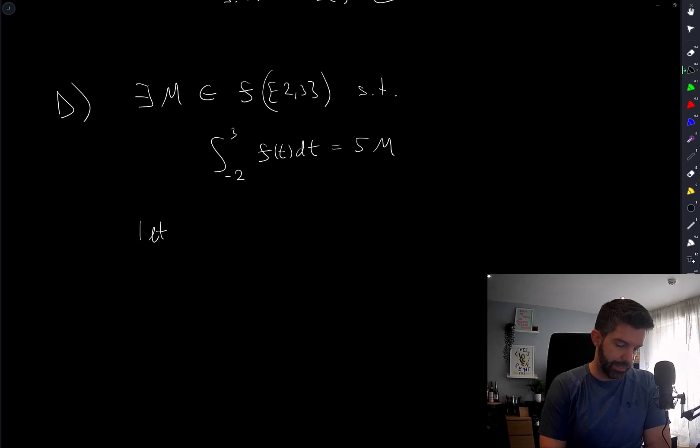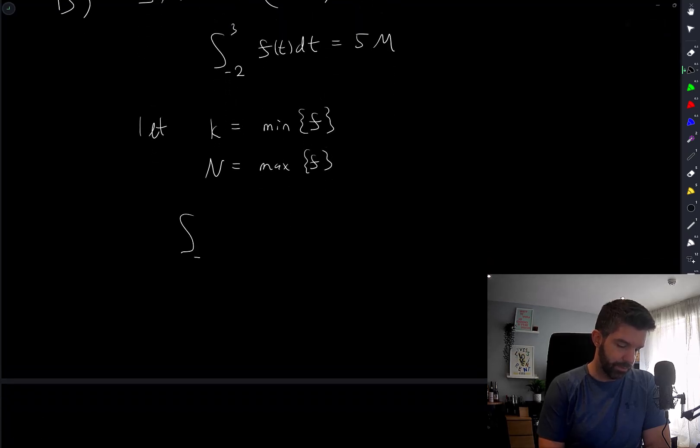Well, let's let k be equal to the minimum of f, and n be equal to the maximum of f. f has a minimum and maximum, because it's continuous on a compact interval. So the integral from negative 2 to 3 of f of t dt, this is less than or equal to the maximum times 5, and bigger than the minimum times 5. If I replace f with its minimum value here, then the integral becomes 5 times that minimum value.